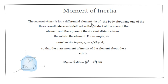Think of it as a small mass — a differential element dm. They are similar to regular elements but very small. When looking at these little mass elements along any one of the three coordinate axes, you can define the moment of inertia mathematically as a product of the mass of the element.